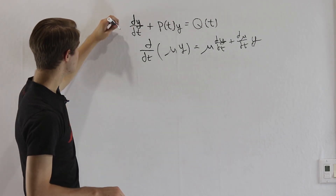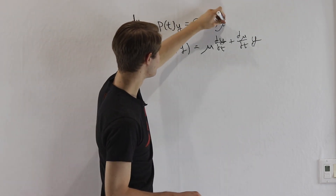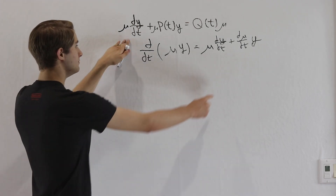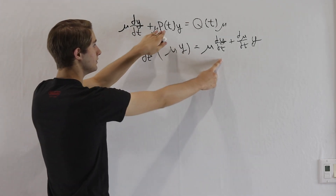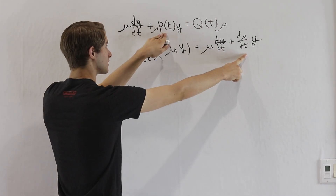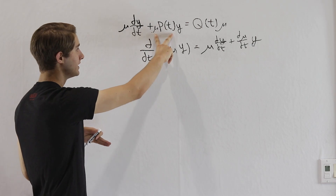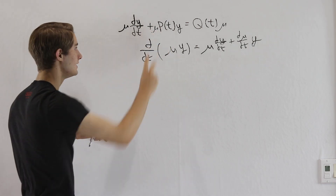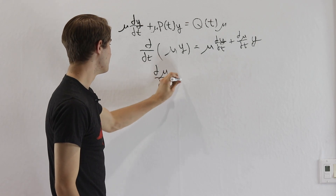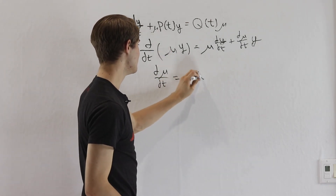If we multiply through this whole equation by mu, notice what we need this equation to satisfy. The mu times dy/dt is what we want, but in order to get the product rule, we need dμ/dt to equal the part next to the y, which means dμ/dt must equal mu times p of t.